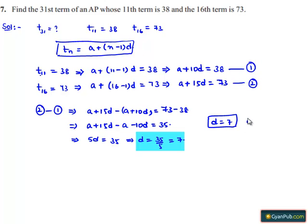If we substitute in equation 1, we can find the value of a. Therefore, a + 10d = a + 70 = 38. Therefore, a = 38 - 70 = -32. So we got the value of a as -32.